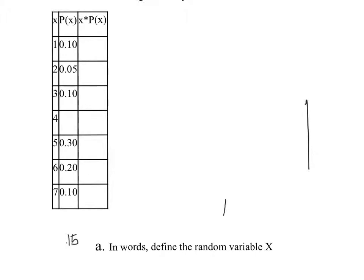Now we need to find X times P(X). Remember, the mean of the probability distribution table equals the sum of X times P(X). This is our mu, or expected value. Let's do the math: 1 times 0.10 is 0.10, 2 times 0.05 is 0.10, 3 times 0.10 is 0.30, 4 times 0.15 is 0.60, 5 times 0.30 is 1.5, 6 times 0.20 is 1.2, and 7 times 0.10 is 0.7.